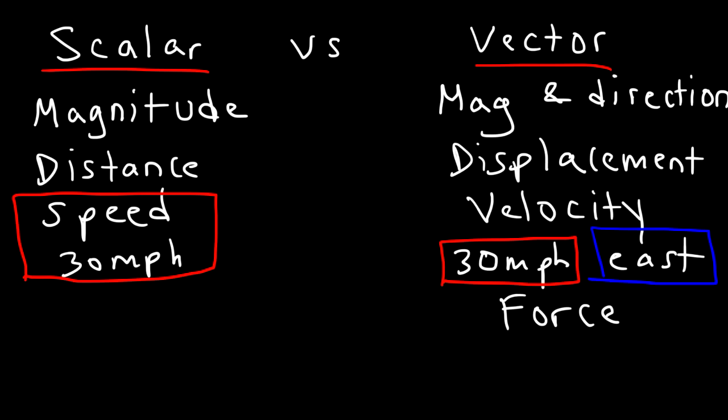Now what about mass? Which column would you put mass under? The left side or the right side? Can you apply direction to mass? Can you say, I have 100 grams of aluminum metal, east, or 200 grams of nickel, west? You can't apply direction to mass. Therefore, mass is a scalar quantity.